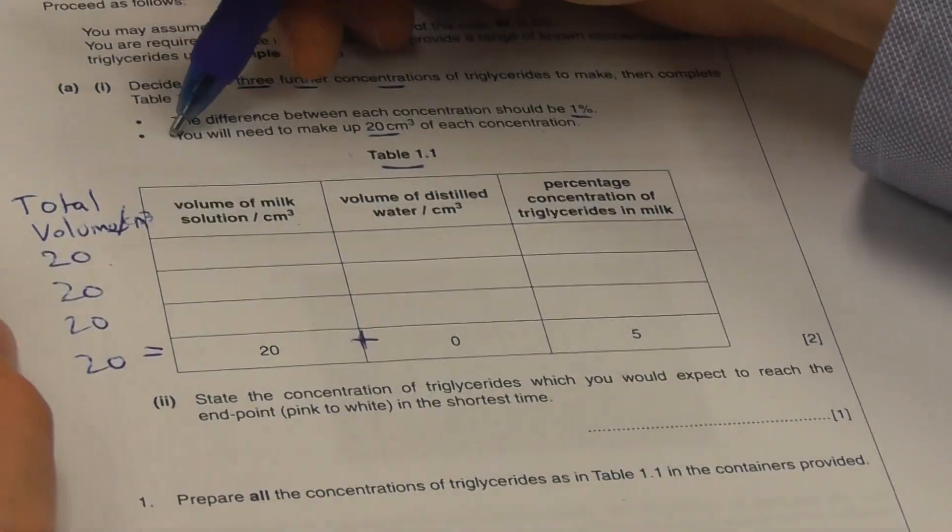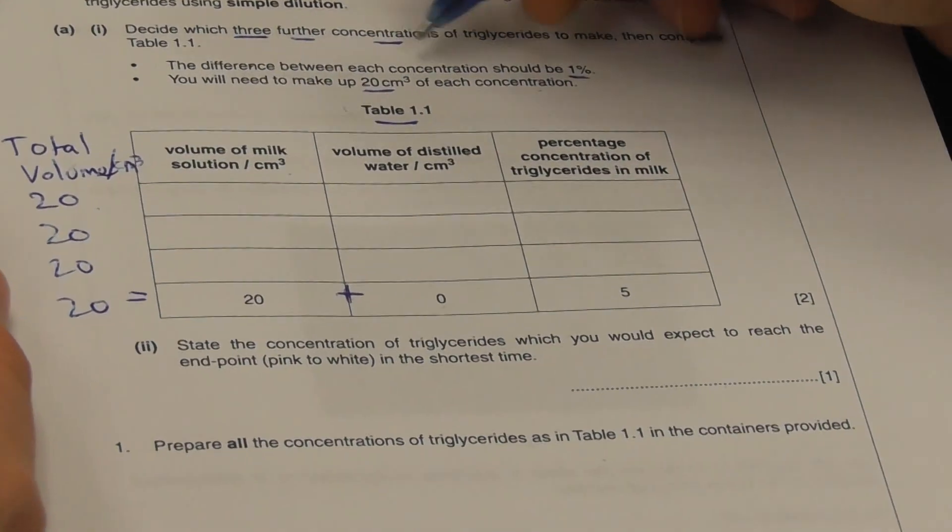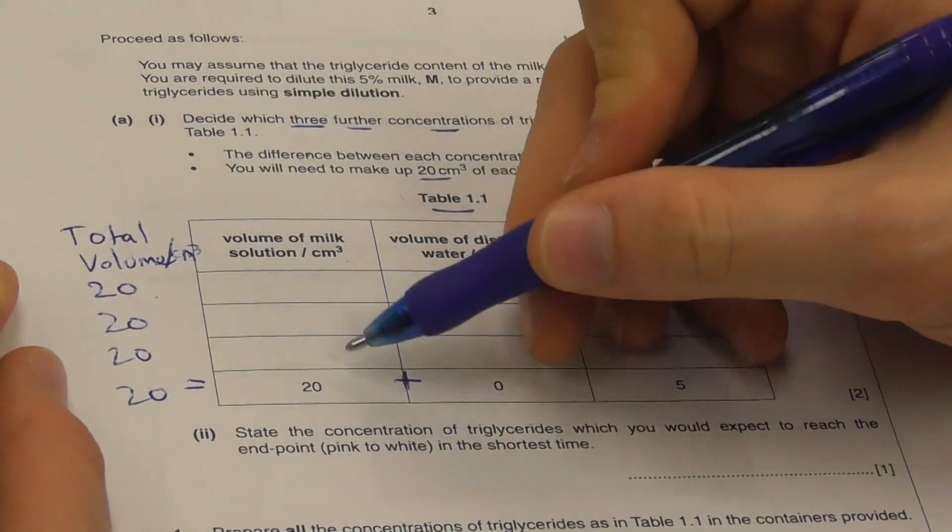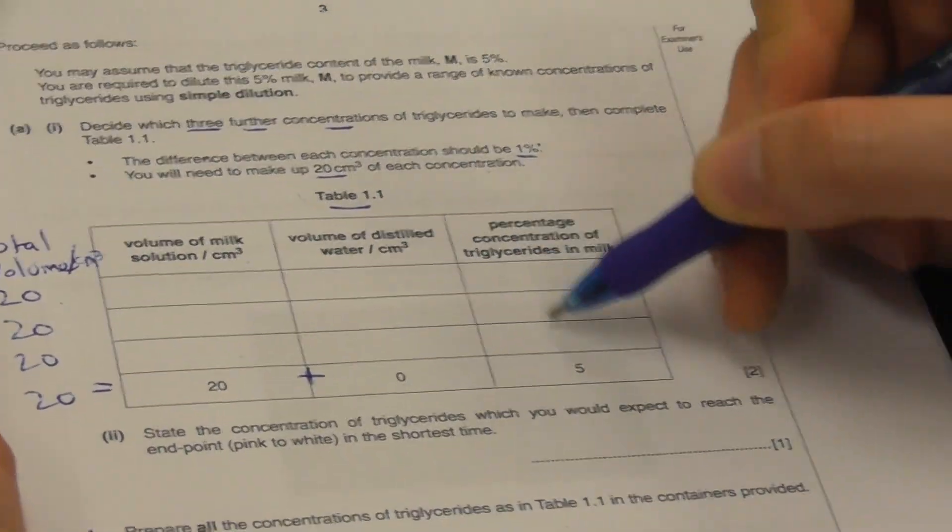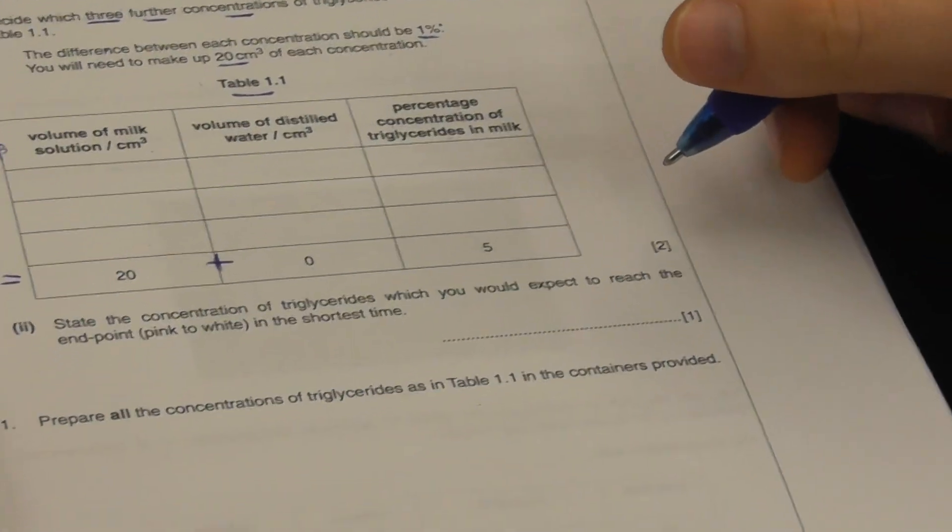So that jives with this. The difference between each of our concentrations should be 1%. And we're going to make 3 further concentrations.